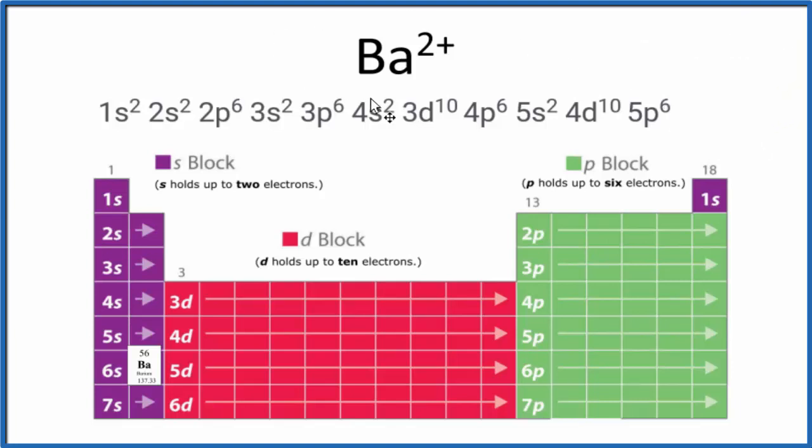And this is the electron configuration for Ba2+, the barium ion. We just have two less valence electrons. We still have 56 protons, just like neutral barium. It's the number of electrons that are different for ions. This is Dr. B with the electron configuration for Ba2+, the barium ion. Thanks for watching.